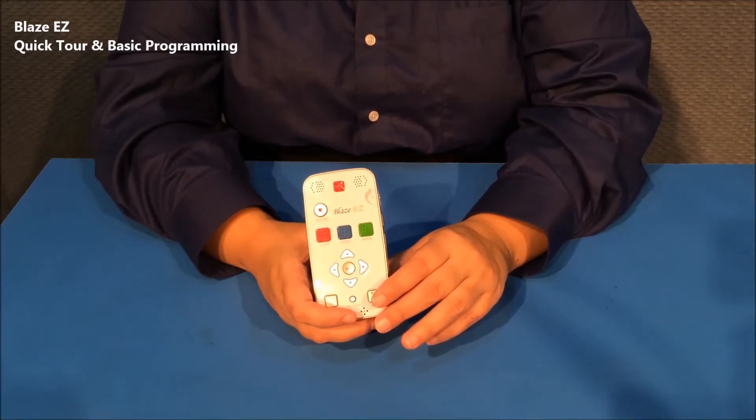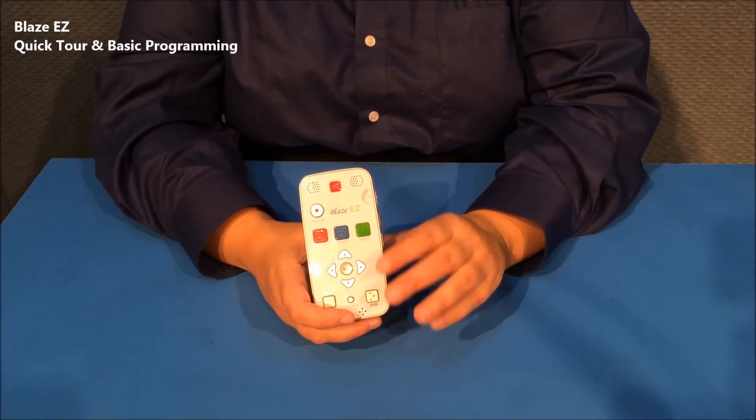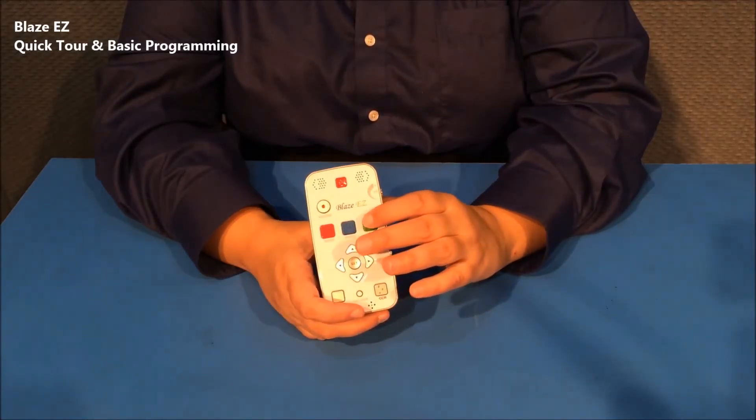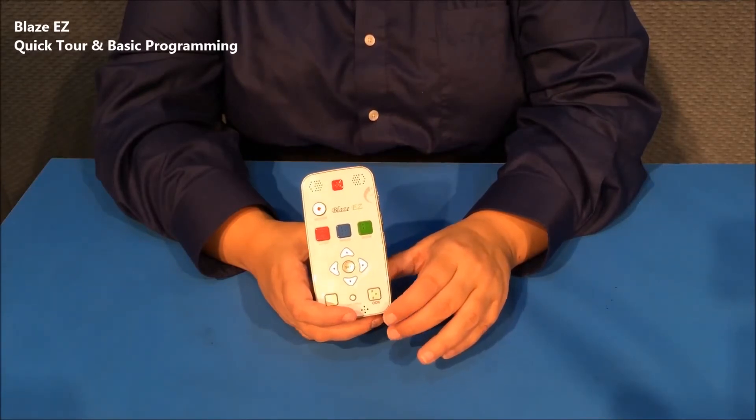I actually would not have had to press cancel that last time to return to the home menu. If I'm playing a book and I want to play media or OCR or the FM radio, I can actually simply just press one of these labeled buttons. So I don't actually have to cancel out of the program I'm in. I can immediately switch.